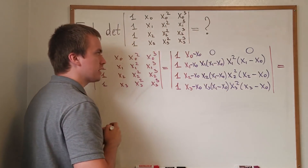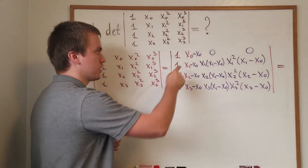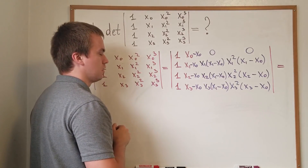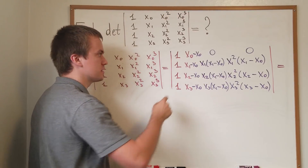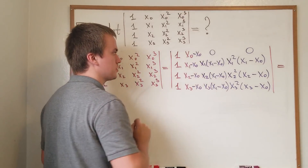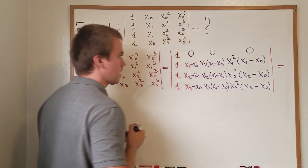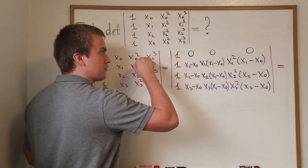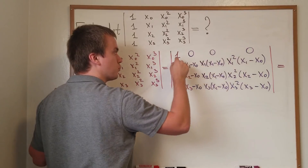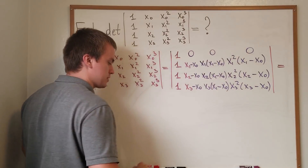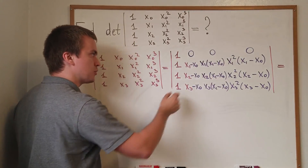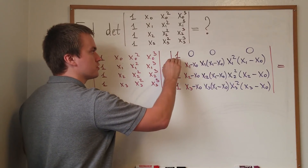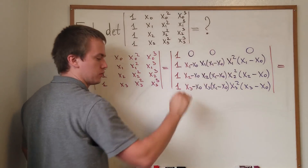After applying the column operation of taking the second column multiplied by negative x₀ and adding to the second column, we get this updated column. Repeating once more — taking the first column, multiplying by negative x₀, and adding to the second column — the first entry becomes zero. So in our determinant the first row has a one followed by all zeros, which means we can expand the determinant along the first row.